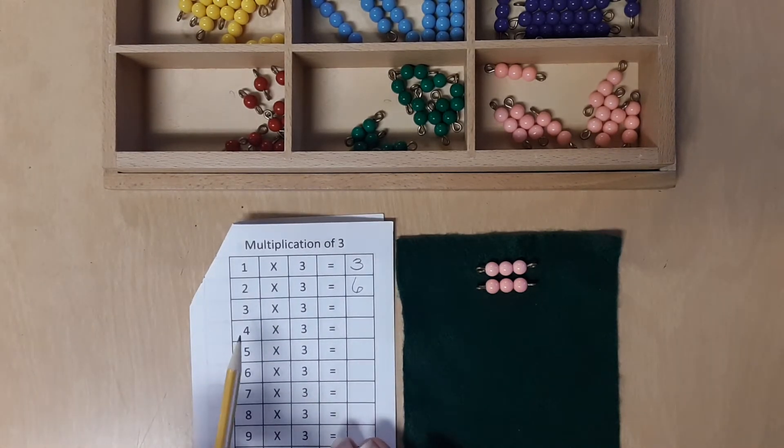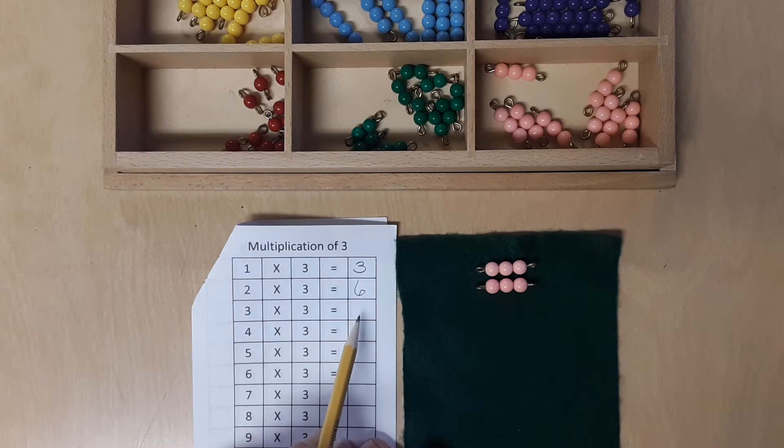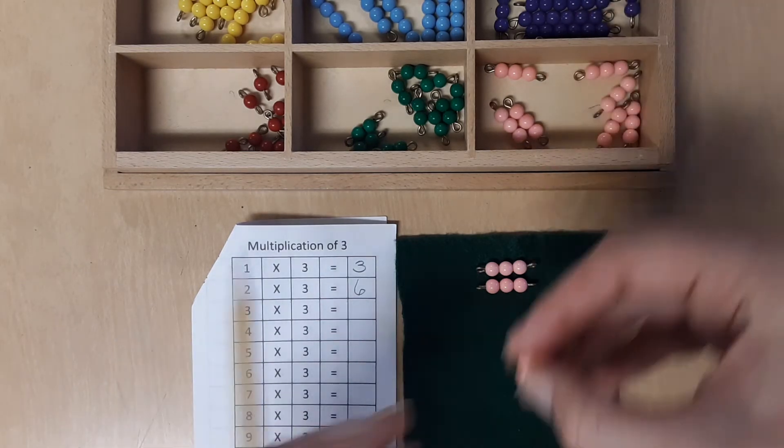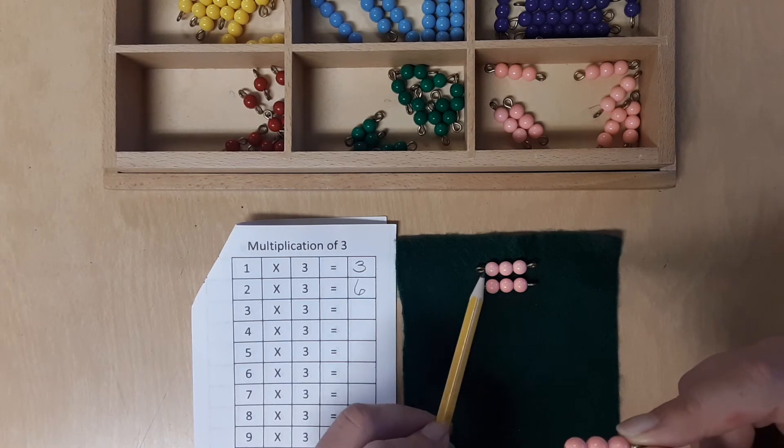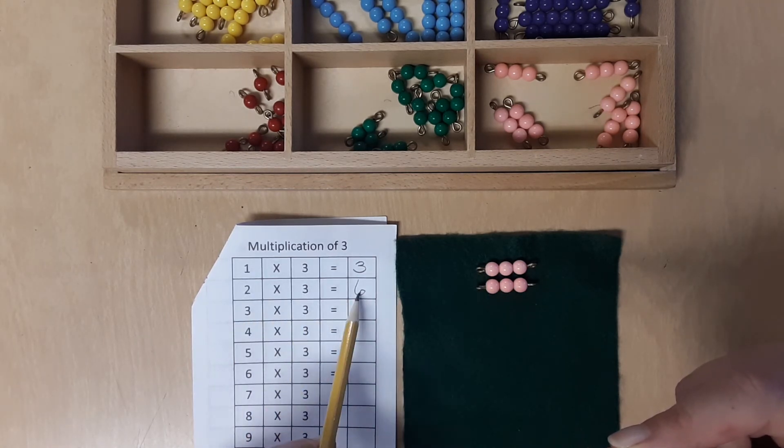Now for this next equation, I'll point and you read the equation. Ready? Go. Okay. This is telling us that we need to get one more bead, one more 3's bead, and we're going to count on from 6 because 2 times 3 equals 6.